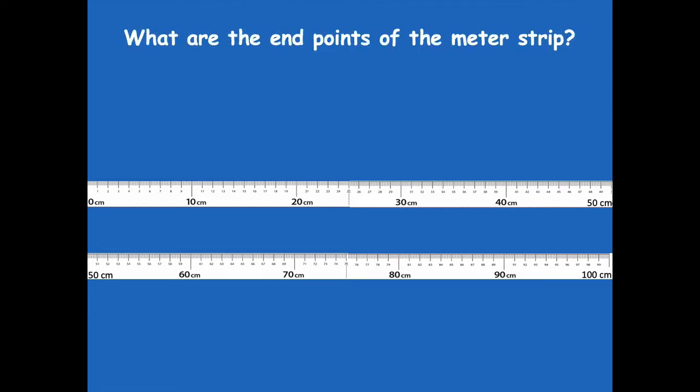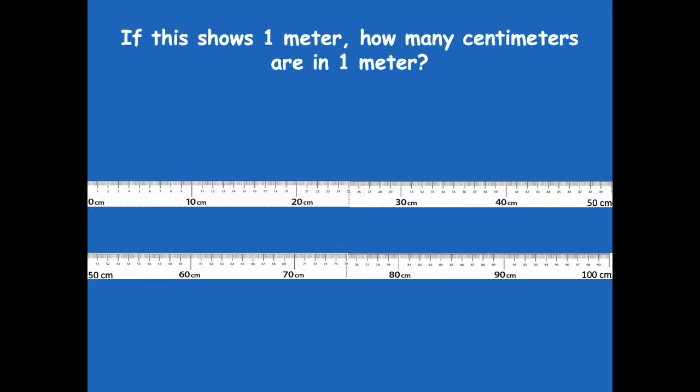What are the end points of the meter strip? Here we have zero, and the other end point — it goes on the bottom line — is 100 centimeters. So zero centimeters and 100 centimeters are our end points. If this shows one meter, how many centimeters are in one meter? Yeah, 100 centimeters — that's the total length.